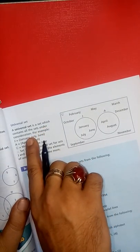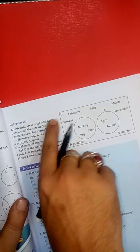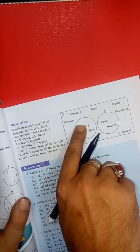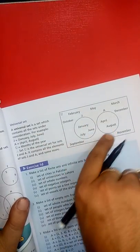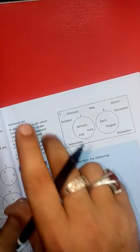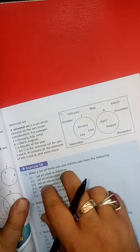Universal set is a set which contains all the sets under consideration. For example, if you have set J with January, June, July and set K with April, August, all belong to the universal set of months of the year.